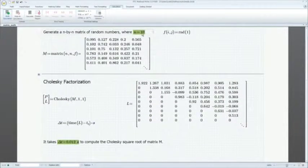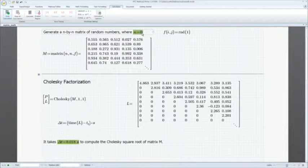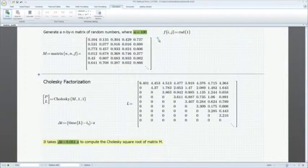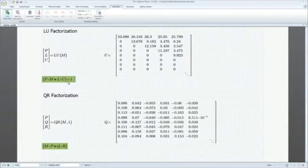PTC Mathcad Prime 3.0 continues to enhance numeric calculation capabilities. New matrix decomposition functions have been added, which are up to 100 times faster, provide extended capabilities such as pivoting and complex number support, and return the result in an easier-to-work-with format.